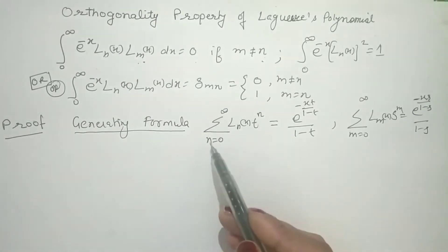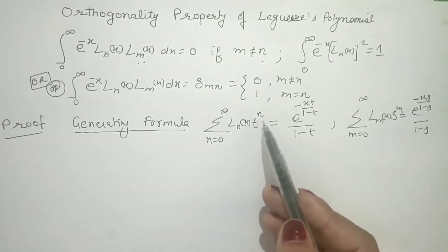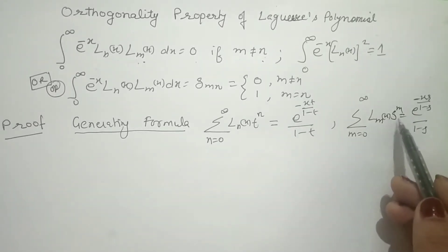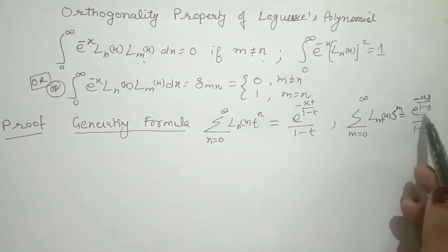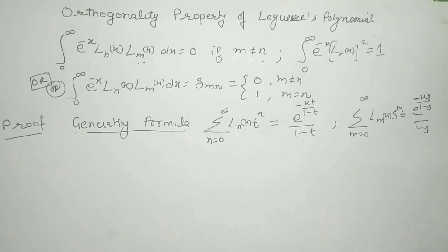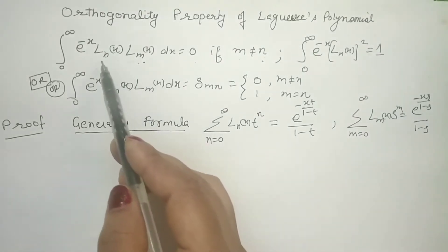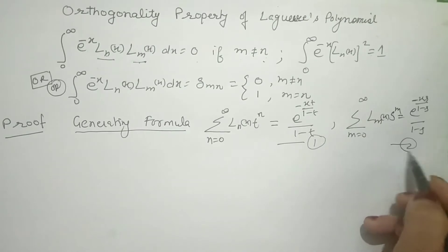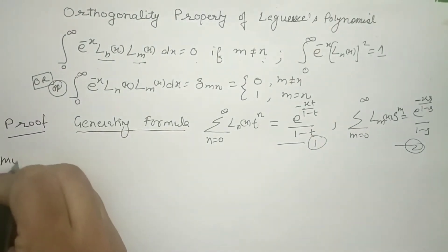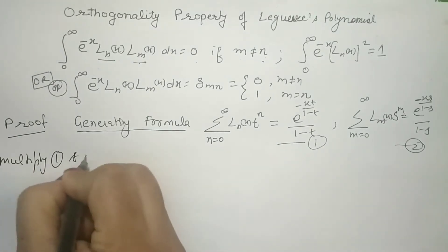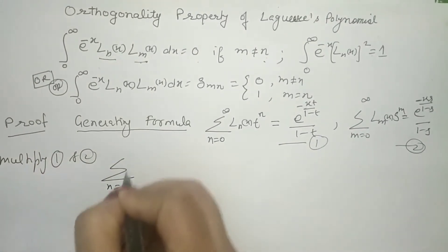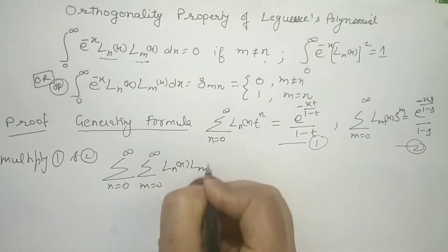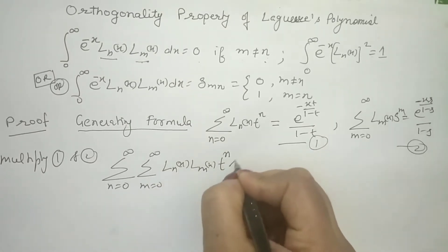The generating formula means: summation with n varying from 0 to infinity of Ln(x) · t^n equals an exponential function. For Lm, we take another variable s in place of t to get another expression for the generating formula of Lm(x). We then multiply these two expressions — calling them equation 1 and equation 2 — to get a double summation with n from 0 to infinity and m from 0 to infinity of Ln(x) · Lm(x) · t^n · s^m.